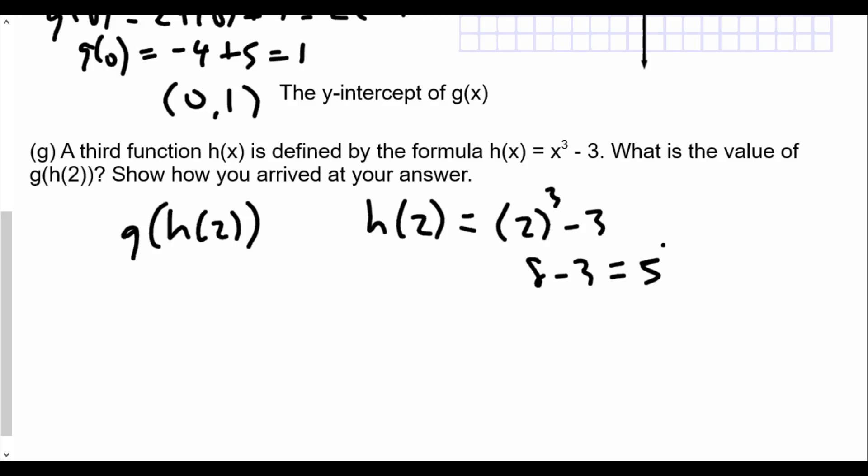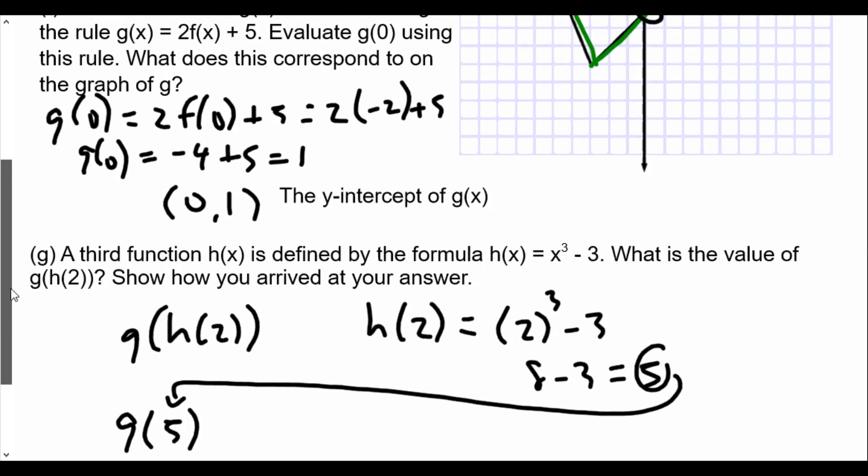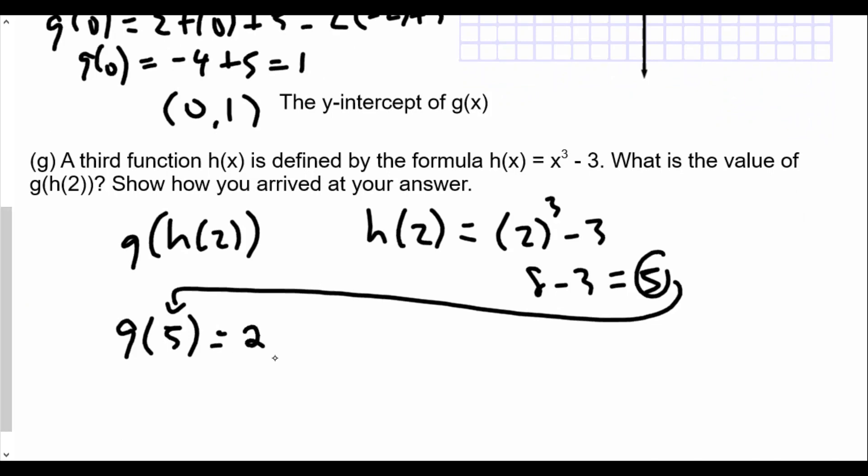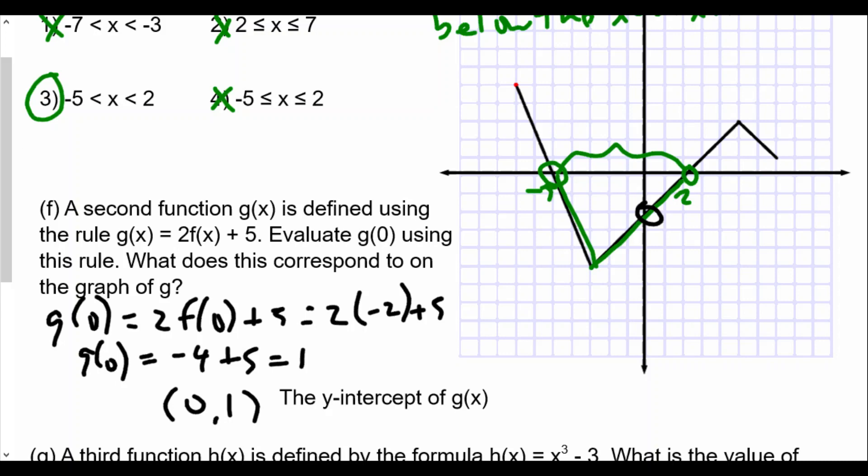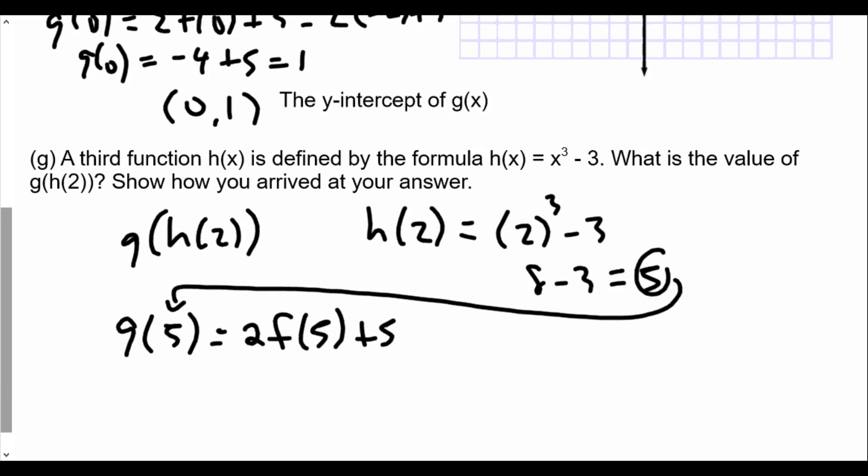So we will take this number and plug it into g. Since h(2) equals 5, we'll find g(5). But if you remember, g(5), the function g, going back to our previous problem, is 2f(x) plus 5. So that would mean that we'll have 2 times f(5) plus 5. So now let's go back to the graph and find f(5). So f(5), let's see now, 1, 3, 4, 5. f(5) brings us back down. So f(5) is equal to 3. So 2 times 3 plus 5, that's equal to 6 plus 5, or 11.